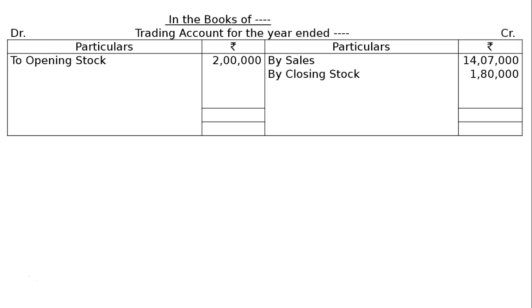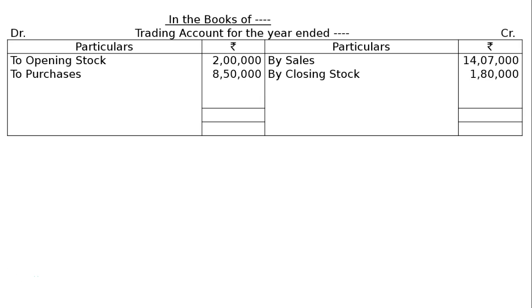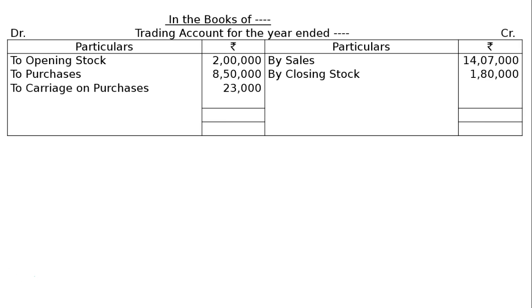Then purchases rupees 8 lakh 50,000, and carriage on purchases rupees 23,000. The items are now posted. Total the credit side — that is rupees 15 lakh 87,000 — and carry it to the debit side as rupees 15 lakh 87,000.